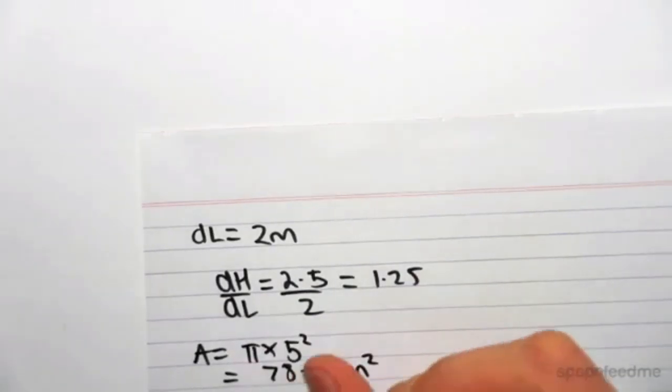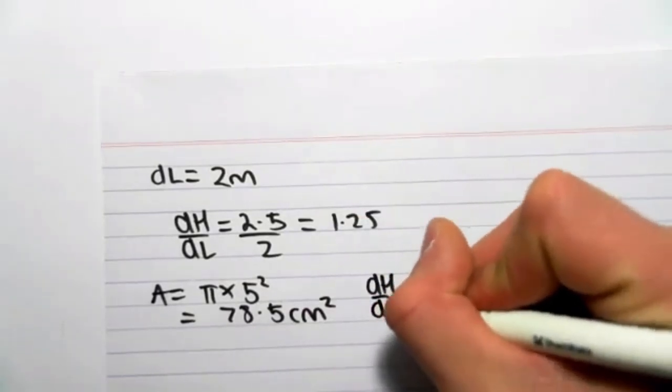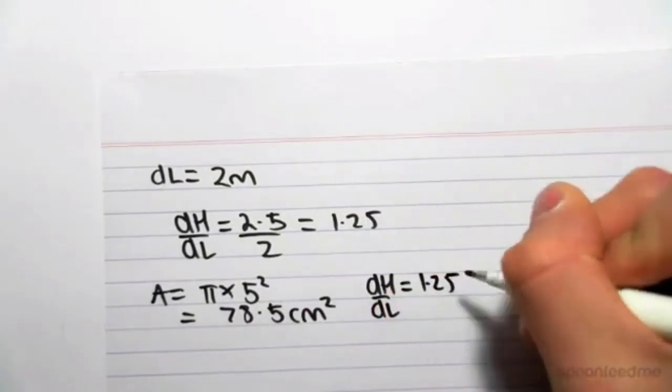So pi by 5 squared is 78.5 centimeters squared. So now we have A equals 78.5 centimeters squared.